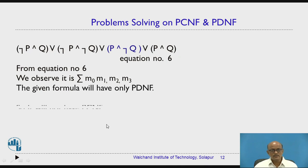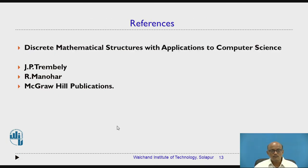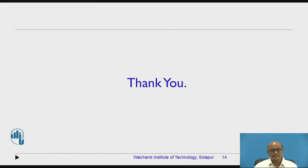Since this is the summation of all four minterms, this formula is called a tautology. I hope you have understood how to solve problems of PCNF and PDNF. These are the references. Thank you very much.